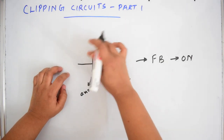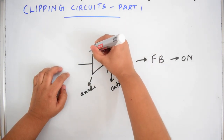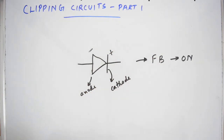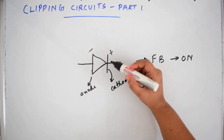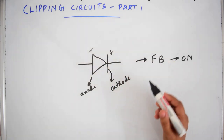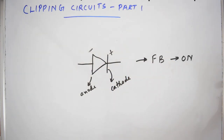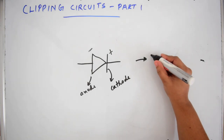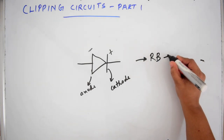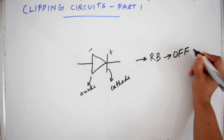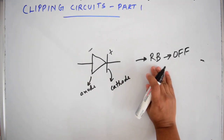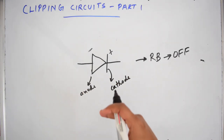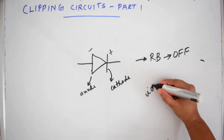Now in the reverse case — if a negative potential comes at the anode and a positive potential comes at the cathode, meaning the cathode is more positive than the anode, then the diode will be reverse biased or it will be off. No current will be flowing through this diode. In these circuits, we are considering ideal diodes.